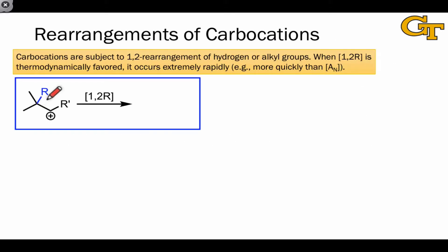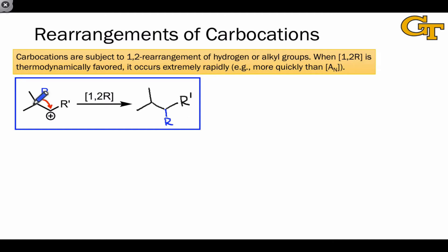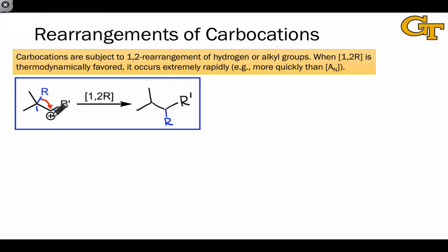The 1,2 rearrangement elementary step in a carbocation context involves the migration of a hydrogen or an alkyl group from one carbon to the carbon next door, using a pair of electrons in the carbon-hydrogen or carbon-carbon bond. In the resulting product, the migrating group has moved one carbon over from carbon-1 to carbon-2 — this is why it's called 1,2 rearrangement. The carbocation, the positive charge, has shifted as well from carbon-2 back to carbon-1.